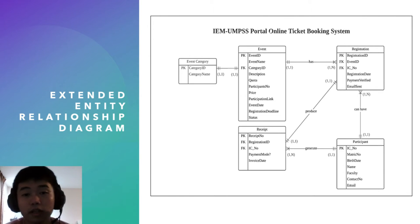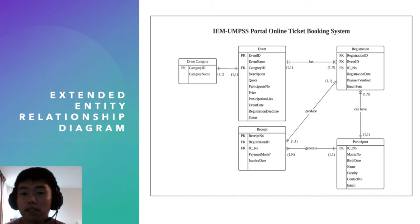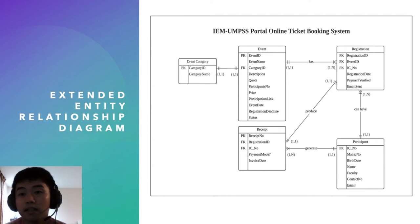For the event category table, there is one primary key, which is category ID. For the event table, there is one primary key, which is event ID, and one foreign key, which is category ID. From the registration table, we can see one primary key, which is registration ID, and two foreign keys, which are event ID and IC.